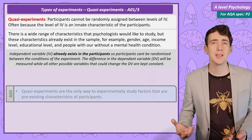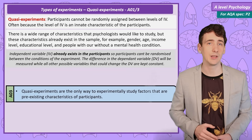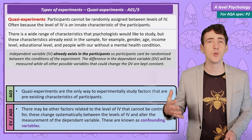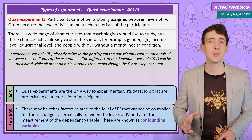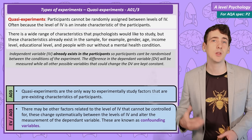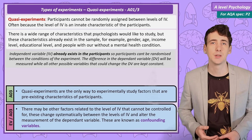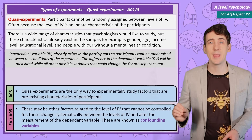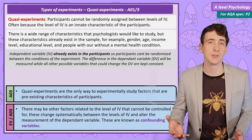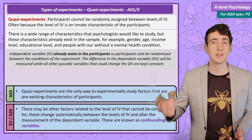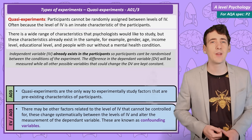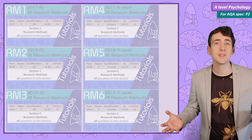A strength of quasi-experiments is that it's simply the only way to study these factors. But a negative is that there could be differences between groups that go beyond group membership. For example, in a study on males and females solving puzzles, differences in how they've been educated and socialised may explain the results. These factors that change systematically between conditions and can't be controlled are known as confounding variables.